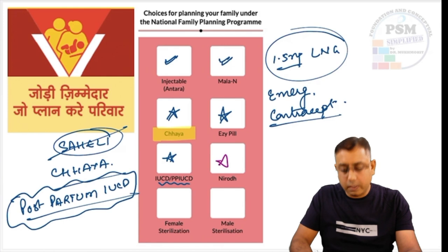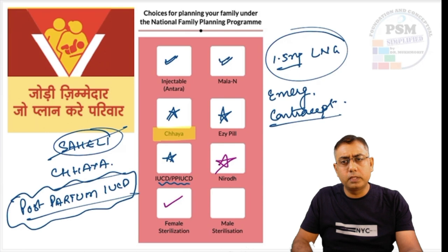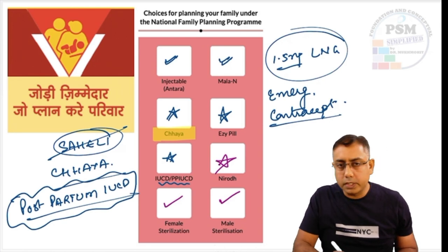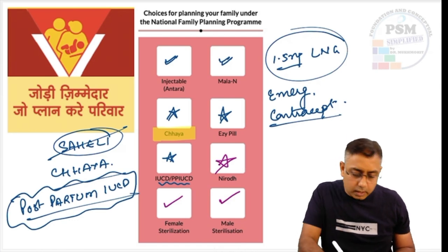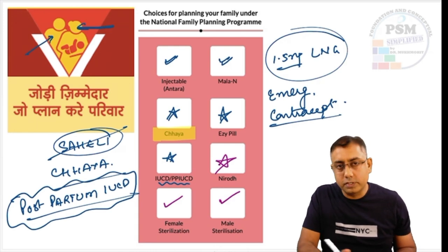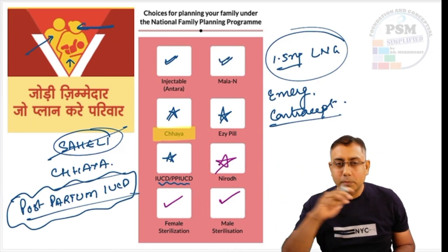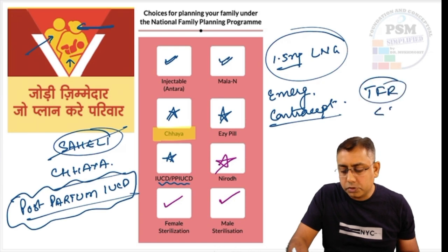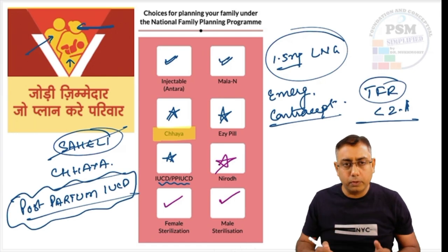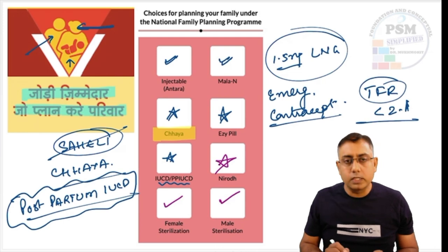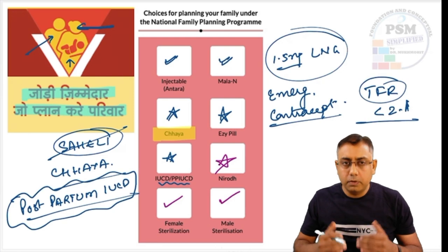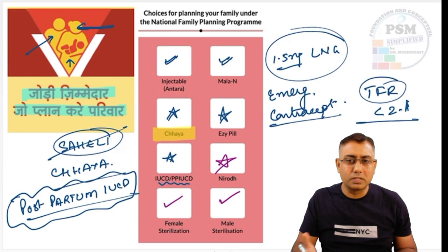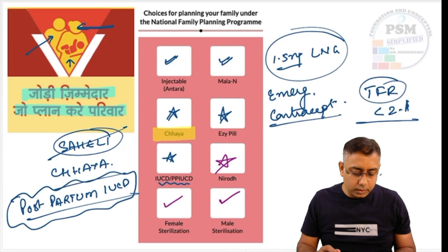Next are Niroth condoms, which have always been the mainstay of the National Family Planning Program. Apart from that, female sterilization methods — tubectomy or mini-lap procedures — and male sterilization using the non-scalpel vasectomy technique. The logo shows a husband and wife carrying one child, suggesting the government is promoting a single-child norm, though the current target TFR should be less than 2.1 — we are currently hovering around 2.2. The slogan is 'Jodi Zimmedar Jo Palan Kare Parivar' — just a slogan, not a logo name.